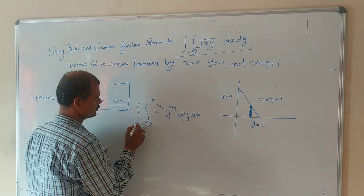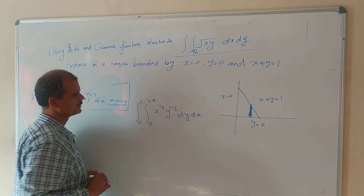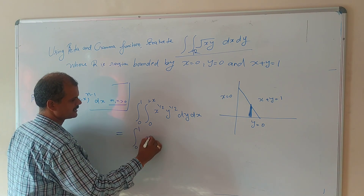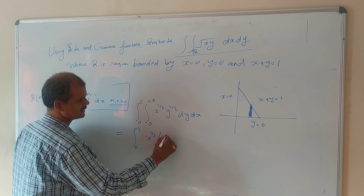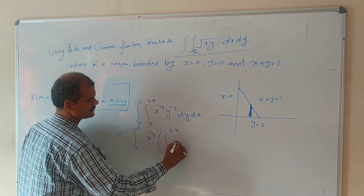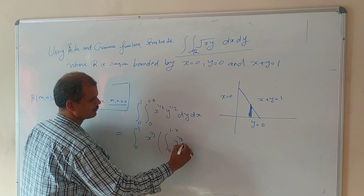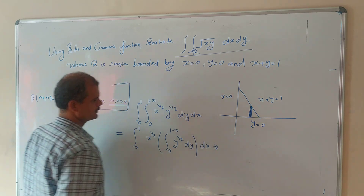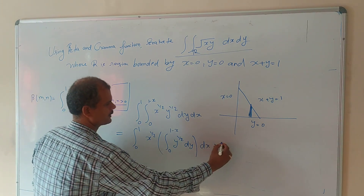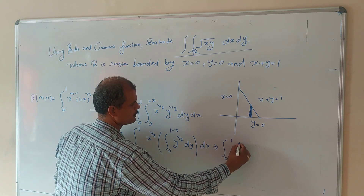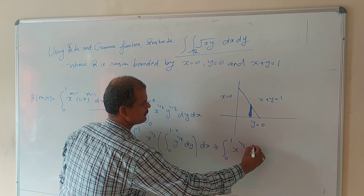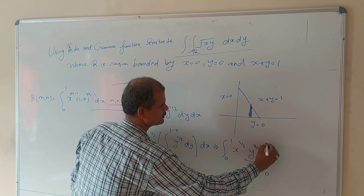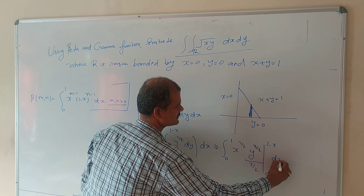The x limit will be 0 to 1. We can integrate this: it becomes the integral from 0 to 1 of x^(1/2) times the inner integral from 0 to (1−x) of y^(1/2) dy, then dx. Integrating y^(1/2) gives y^(3/2) divided by (3/2), evaluated from 0 to 1 minus x.